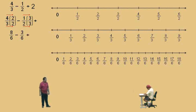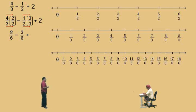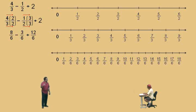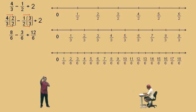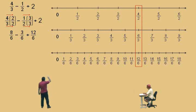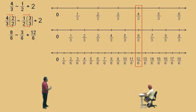Now we go to our whole number, the 2. The 2 is not a fraction, although you could write it as a fraction by simply putting it over 1: 2 over 1. What we're going to do is write 2 with a denominator of 6. It's 12 over 6, because 12 divided by 6 is 2. Now, 2 can be written in different ways: 4 over 2, because 4 divided by 2 is 2; or 6 over 3, because 6 divided by 3 is 2. But in this case, we're dealing with 6 as our common denominator, so we want 12 over 6.